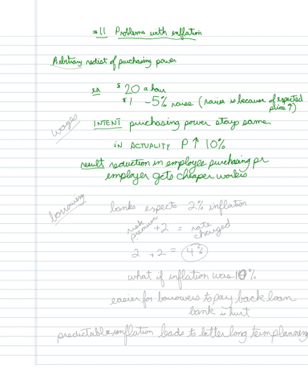Because even though he's paying $1 extra an hour more, prices actually went up $2, the equivalent of $2 in price. So the real wage, the purchasing power of the wage has actually fallen. This wasn't intended though. It was arbitrary.